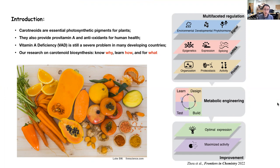Vitamin A deficiency is still a severe problem in many developing countries. Although carotenoids are very rich in many vegetable crops, in staple crops the carotenoid and provitamin A content is relatively low. Our research focuses on the regulation of carotenoid biosynthesis — why and how — and how to apply that knowledge to metabolic engineering to improve carotenoid content in crops and make them more stable for human health.